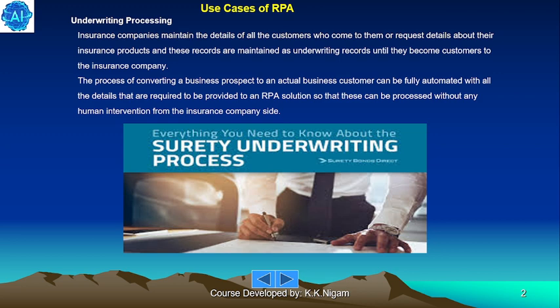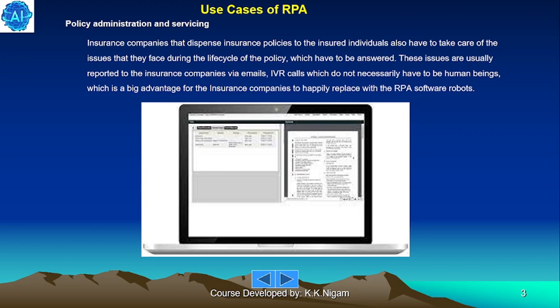Policy administration and servicing: insurance companies that dispense insurance policies to insured individuals also have to take care of issues that arise during the life cycle of the policy. These issues are usually reported via emails and IVR calls, which do not necessarily require human beings — a big advantage for insurance companies, as these can be replaced with RPA software robots.